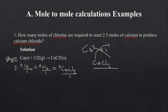How do you know which ones to use? You simply pick the species mentioned in the question. They are asking how many moles of chlorine are required to react with 2.5 moles of calcium to produce calcium chloride. So chlorine and calcium must both be part of the equation you use. As a result, we choose only that part of the equation involving calcium and chlorine.